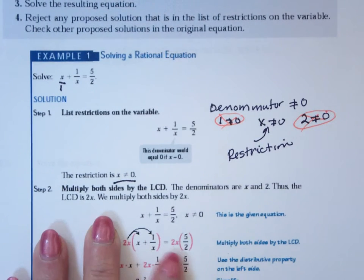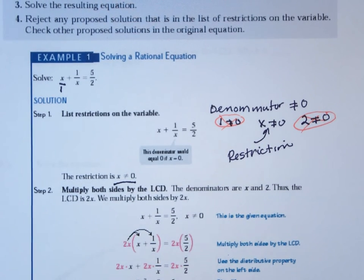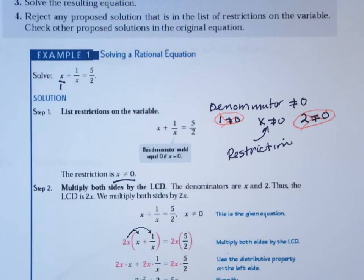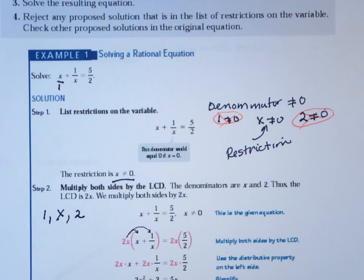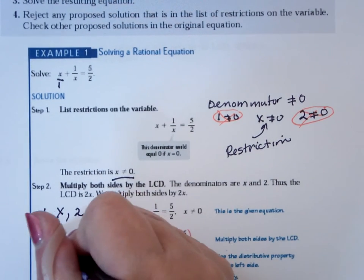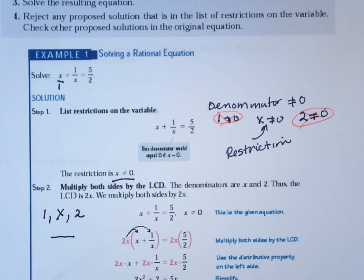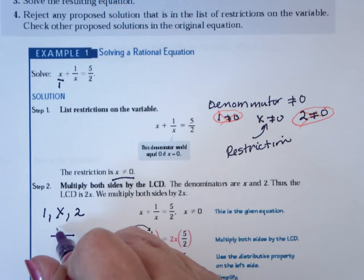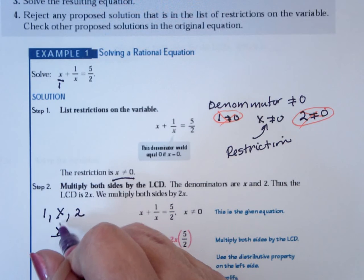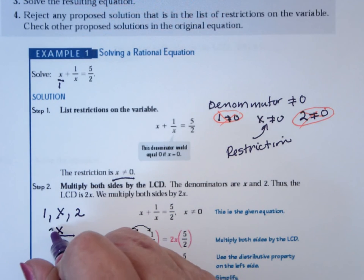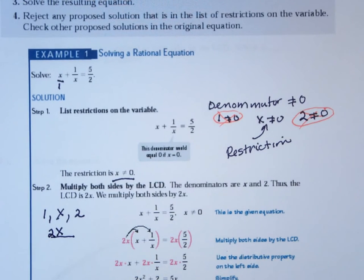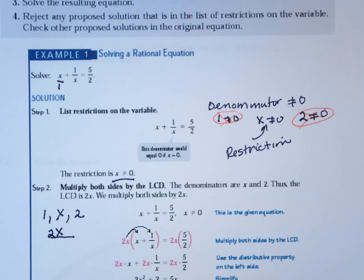Now, remember how we find an LCD. We have one, we have x, and we have two. So one has to be part of it, but one's always part of everything. X has to be part of it, so x divides it evenly. Two has to be part of it, so that two divides it evenly. So the LCD is going to be 2x. That's the smallest.